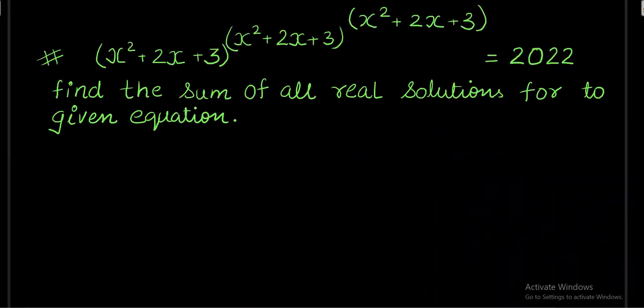It says x squared plus 2x plus 3 raised to the power x squared plus 2x plus 3 raised to the power x squared plus 2x plus 3 is equals to 2022. We need to find out the sum of all real solutions for the given equation.